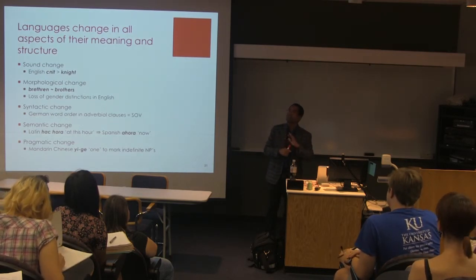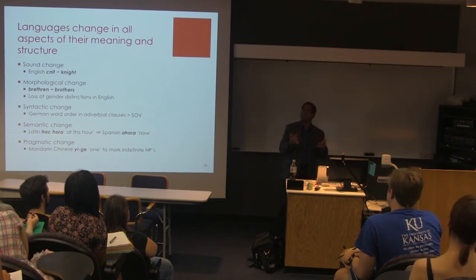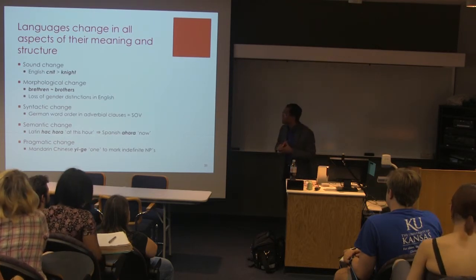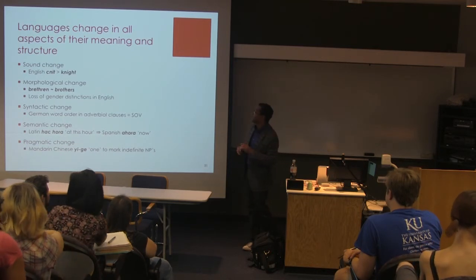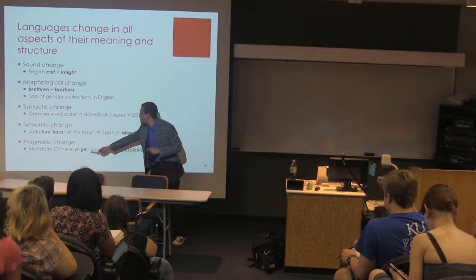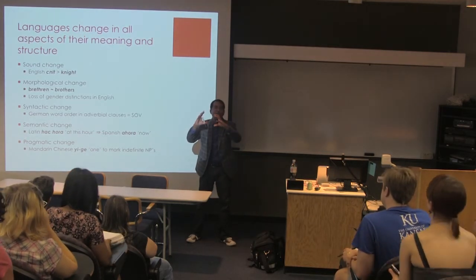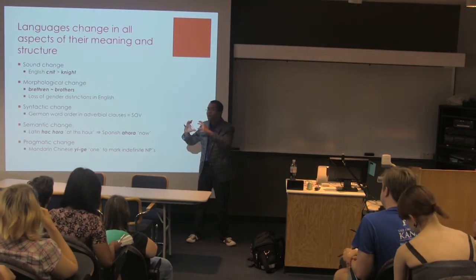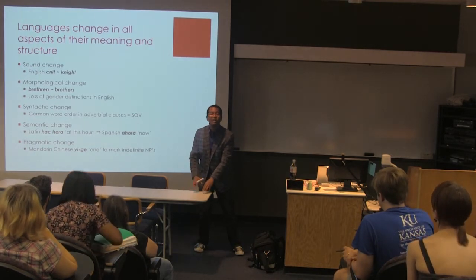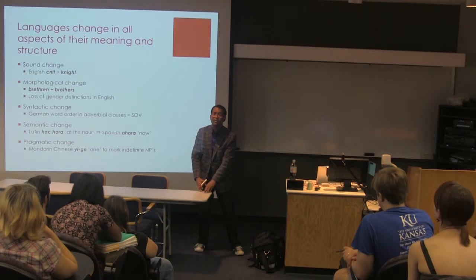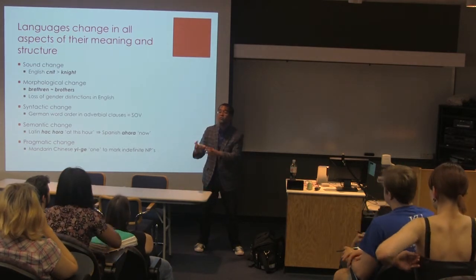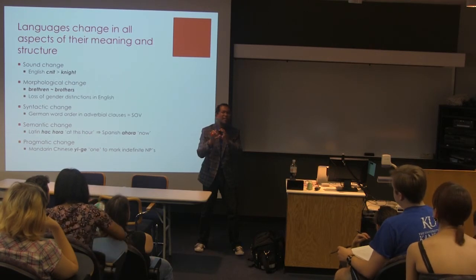Similarly, 'slutty' originally just meant unkempt, not kempt — and then it took on a negative connotation. You can also get pragmatic change. In Mandarin Chinese, you have the form 'yige,' meaning 'one' — the number one. But whenever you put one book, one person, one paper, it begins to take on a different meaning: well, if it's 'one book,' I guess it's 'a book'; 'one person' becomes 'a person.' So you go from meaning the number one to just being an indefinite article.